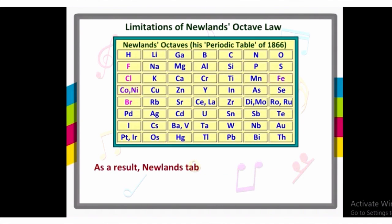On the other hand, iron — which resembles cobalt and nickel in properties — has been placed far away from these elements. As a result, Newlands' table was not accepted by other scientists. However, its important contribution in the process of classification of elements was the periodicity he observed in every eighth element.